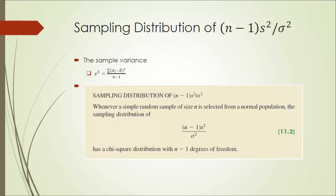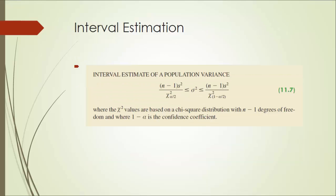Based on this sampling distribution, we can then conduct confidence interval estimation as well as hypothesis testing. Here is the interval estimation for a population variance. Given sample size n and significance level alpha, we can calculate two critical values from the chi-square distribution. I want to remind you that in different software packages,